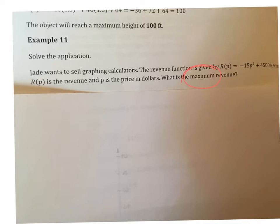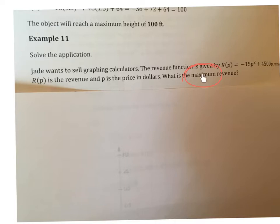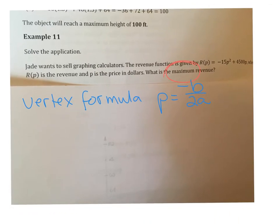Whenever you see this word maximum or even the word minimum in an application with quadratics, it's asking you to find the vertex. So we're going to restate that vertex formula, which is p = -b over 2a. And of course I used p here because p is the variable in the function. So let's find out what a and b are going to be here. Using our function, it looks like a is going to be -15 and b is 4500.